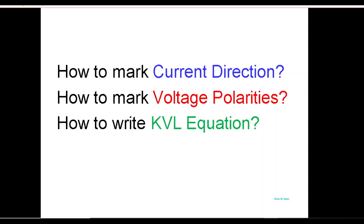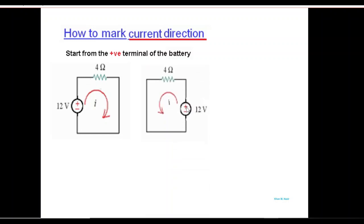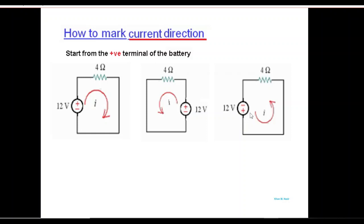In this video we'll be discussing some simple topics like how to mark the current direction, how to mark voltage polarities, and how to write KVL equations. First, how to mark current direction: we take the current out from the positive terminal of the battery. If the battery is on the right-hand side, we take current out from the positive terminal. If the positive terminal is at the bottom, the current will come out from the bottom. This is how current direction is marked.